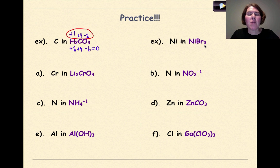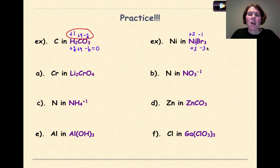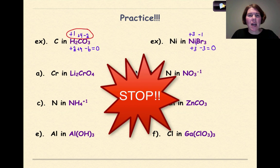Practice example: find Ni's oxidation number in NiBr3. Since we're working with a transition metal, uncrisscross the 3 — Ni is plus 3, and with an assumed subscript of 1, that's plus 3. Bromine is in Group 17, so it has an overall charge of minus 1; minus 1 times 3 gives minus 3. The whole compound is neutral, and everything equals 0. Now pause and try problems A through F on your own.